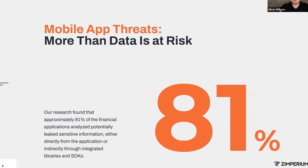In research focused on financial applications, we analyzed hundreds of top banking and payment solutions. We found that approximately 81% of applications released in just that vertical alone are leaking sensitive information — whether through cloud storage solutions, libraries, code implementation, or SDKs being imported. This is a trend across all verticals; we just picked finance as a vertical to analyze.